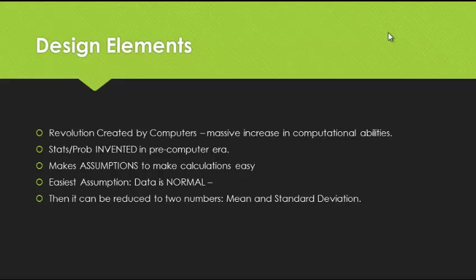One of the things is that there was a revolution created by computers. It happened in my lifetime — in the 80s, the University of Columbia put a personal computer on my desk and I didn't know how to use it. Since then there has been a massive increase in computational abilities. Statistics and probability were invented in the early 20th century. Fisher was one of the creators, along with Neiman and Pearson. They created modern statistical theory in the pre-computer era when calculations were very difficult — even hand calculators were just being invented. So they substituted for computers by making assumptions: 'Let us assume that the data is normal.'